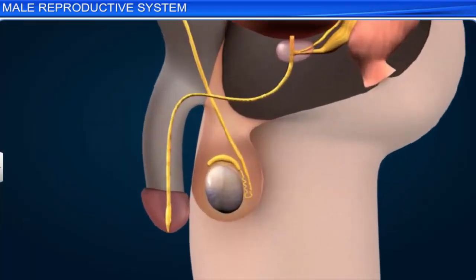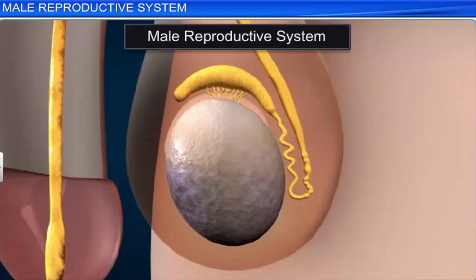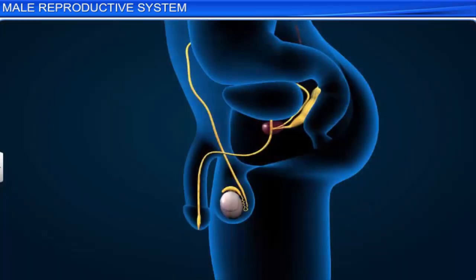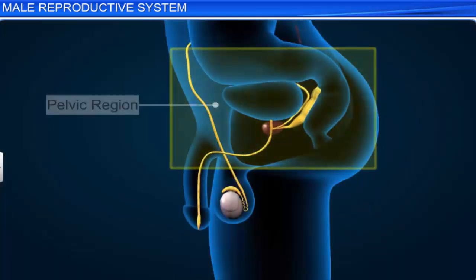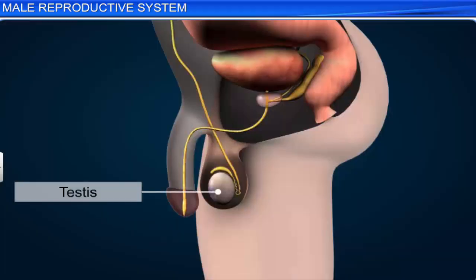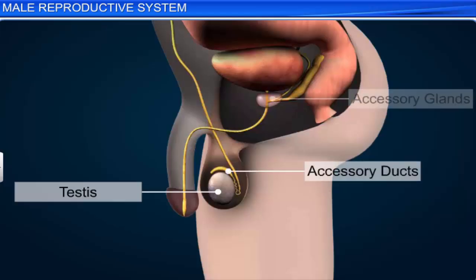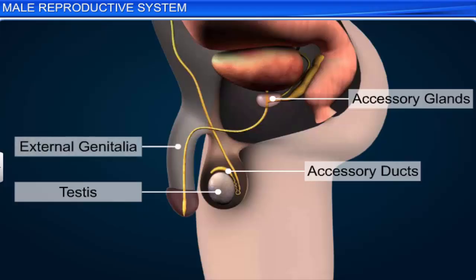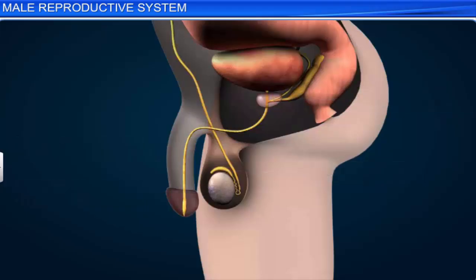Let us learn about the organs of the male reproductive system. The male reproductive system is located in the pelvic region. It includes the testes, accessory ducts, accessory glands, and external genitalia. The testes are covered by a sac-like protuberance of skin and muscles called the scrotum.